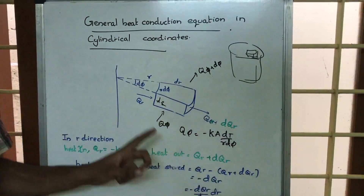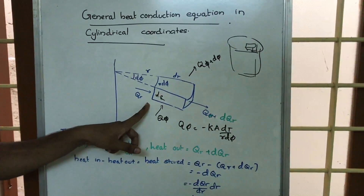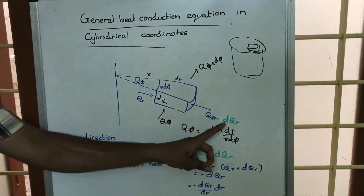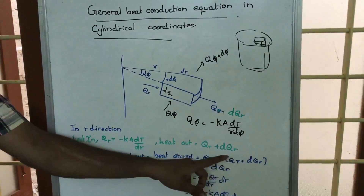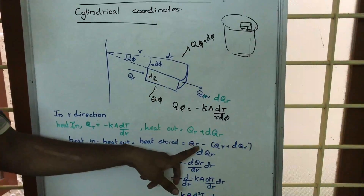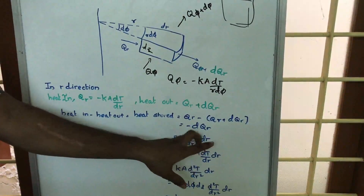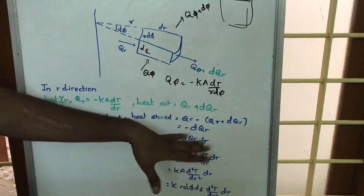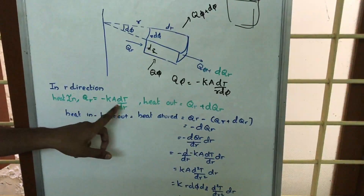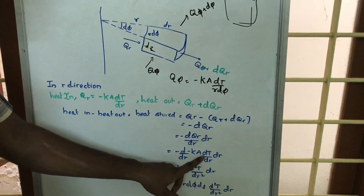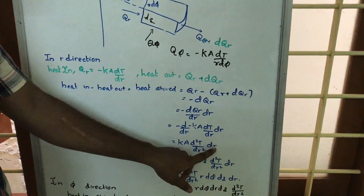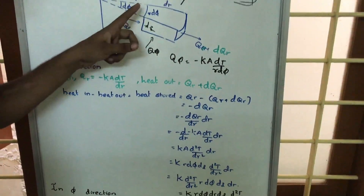Heat entering in the r-direction is qr, which equals minus k·A·dT/dr. Heat going out is qr + dqr. So heat in minus heat out equals heat stored, which equals qr minus (qr + dqr), equal to minus dqr. Multiplying and dividing by dr, and substituting qr = k·A·dT/dr, we get k·A·d²T/dr²·dr.